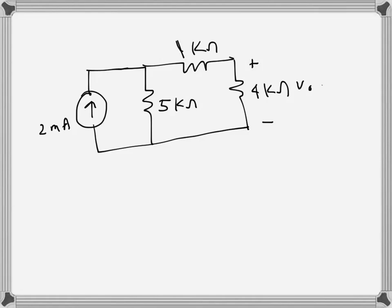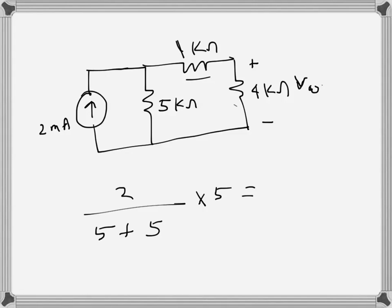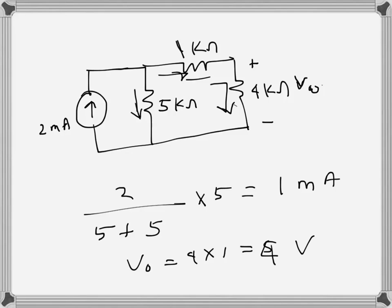In this problem we will first find the voltage V0 across the 4 kilo ohm resistance analytically. Applying the current divider rule, with 5 plus 4 plus 1, the current through the resistance will be 1 milliamp, because there is 5 kilo ohms on each side so the current splits equally. The voltage drop will be 4 times 1 milliamp which gives 4 volts.